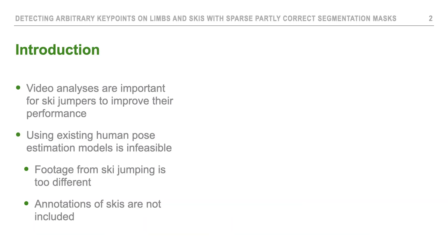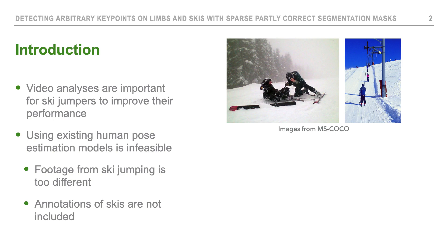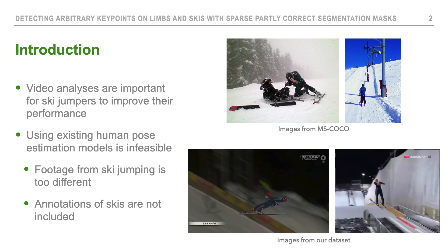I will start off with a short introduction. For ski jumpers, video analysis is important to improve their performance. They are mainly interested in their body joints and the location of the skis in order to assess their performance. Using existing human pose estimation models is infeasible for ski jumping videos, as the footage is too different. If we query the COCO dataset for ski and person, we get images like that, but our dataset has images like this which are really different. Furthermore, annotations of the skis are not included in the COCO dataset.